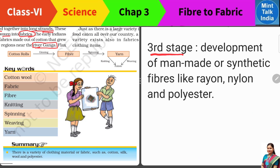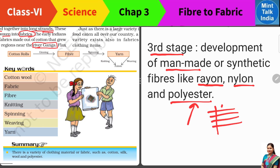Clothing material के development का third stage है when the man started making synthetic fibers. Synthetic fiber को man-made इसीलिए बोलते हैं, क्योंकि ये हम factories में chemicals के द्वारा बनाते हैं, such as rayon, nylon, and polyester — they are produced in factories with the help of chemicals. इनका इस्तेमाल इसलिए होता है क्योंकि ये natural fibers से ज्यादा टिकाऊ होते हैं और बहुत ही सस्ते होते हैं। So there are many different advantages of using synthetic fiber, and that is why they were developed by man.